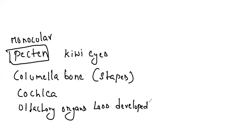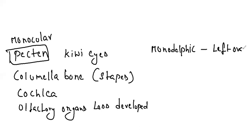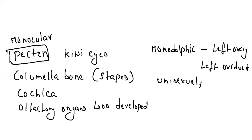Birds are monodelphic — only the left ovary and left oviduct are functional in females; both right and left exist but only the left is functional. Birds are unisexual and sexual dimorphism is well marked. There are no copulatory organs in males. Fertilization is internal.